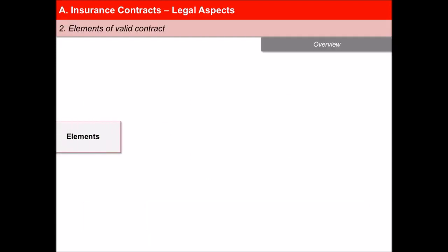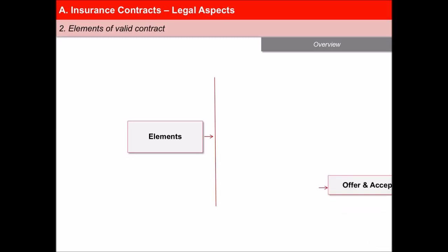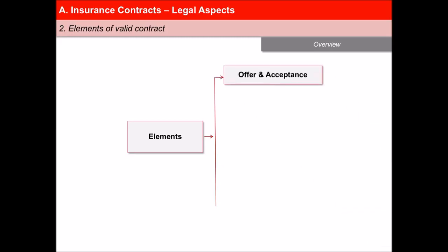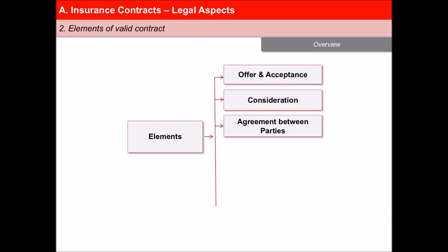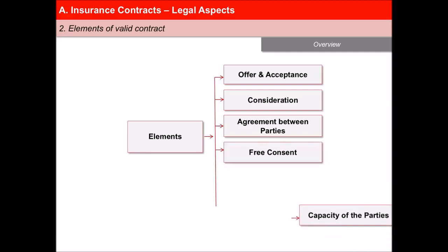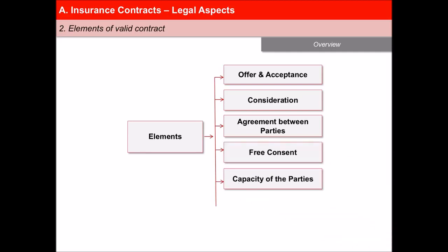Elements of a valid contract are: offer and acceptance, consideration, agreement between parties, free consent, capacity of the parties, and legality.